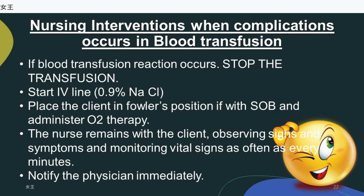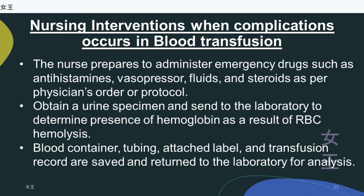Nursing interventions when complications occur: stop the transfusion, start IV line with 0.9% NaCl. Place the client in Fowler's position if experiencing shortness of breath and administer O₂ therapy. The nurse remains with the client, observing signs and symptoms and monitoring vital signs as often as every 5 minutes. Notify the physician immediately. Prepare to administer emergency drugs such as antihistamines, vasopressors, fluids, and steroids per physician's order or protocol. Obtain a urine specimen and send to the laboratory to determine presence of hemoglobin as a result of RBC hemolysis. The blood container, tubing, attached label, and transfusion record are saved and returned to the laboratory for analysis.